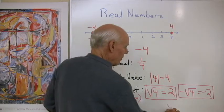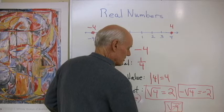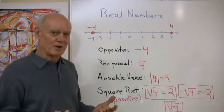And the square root of negative four does not exist as a real number because we can't find a real number to square and get four.